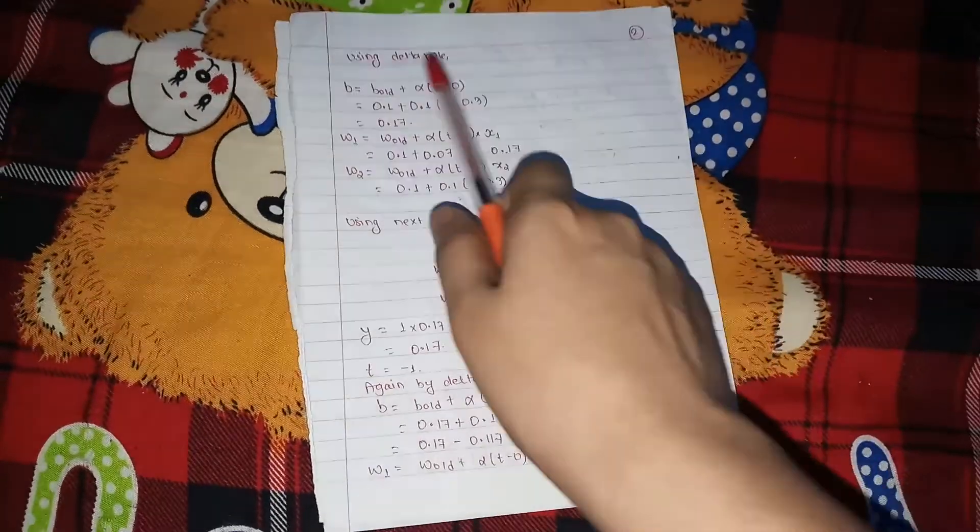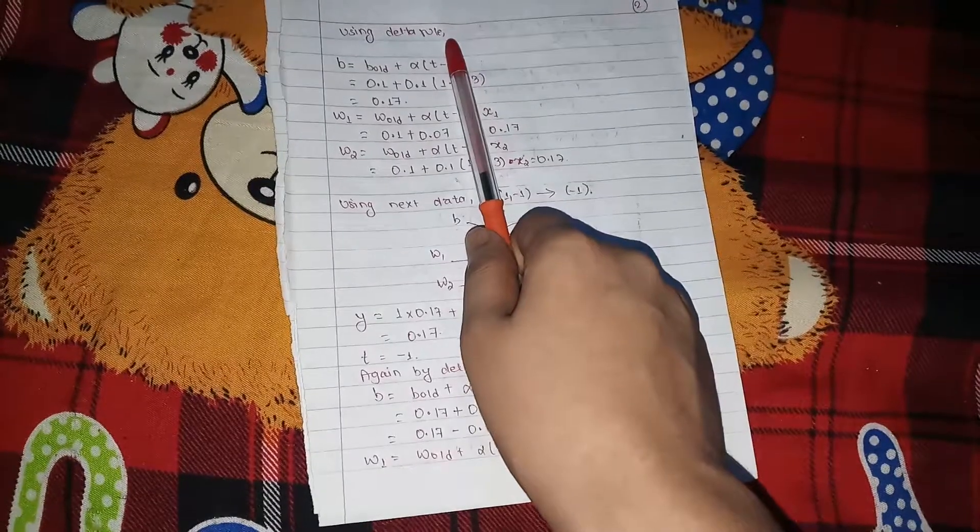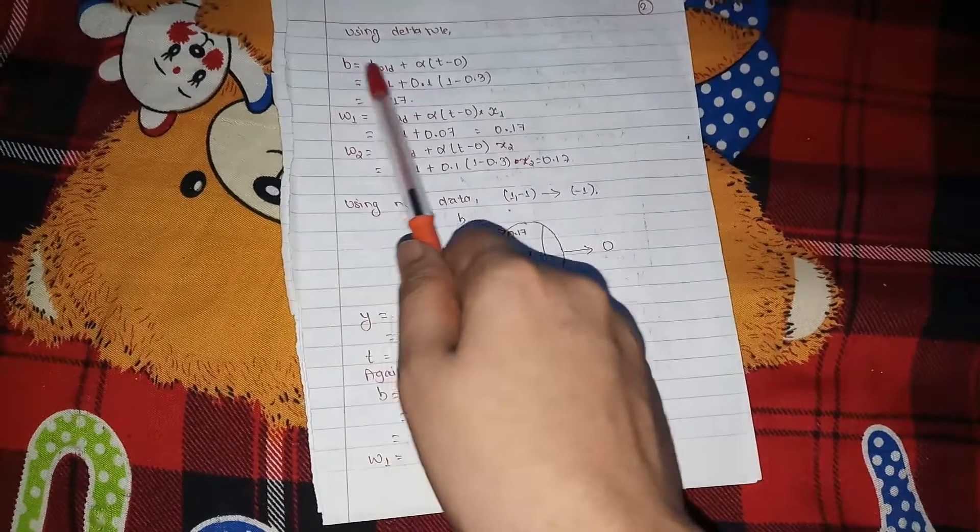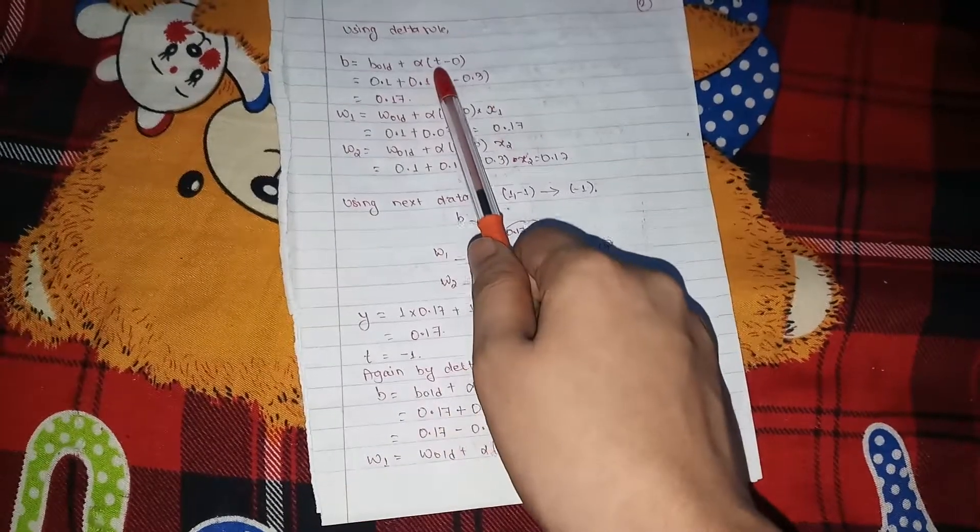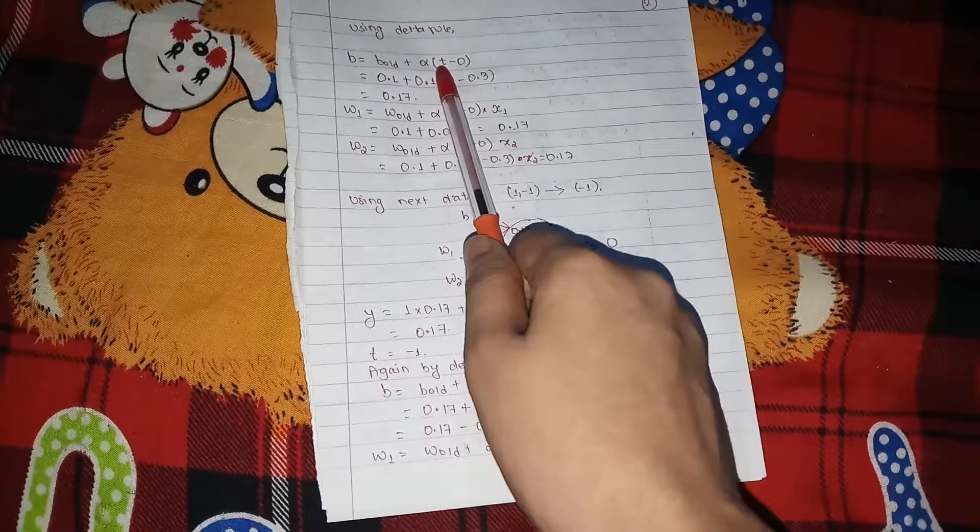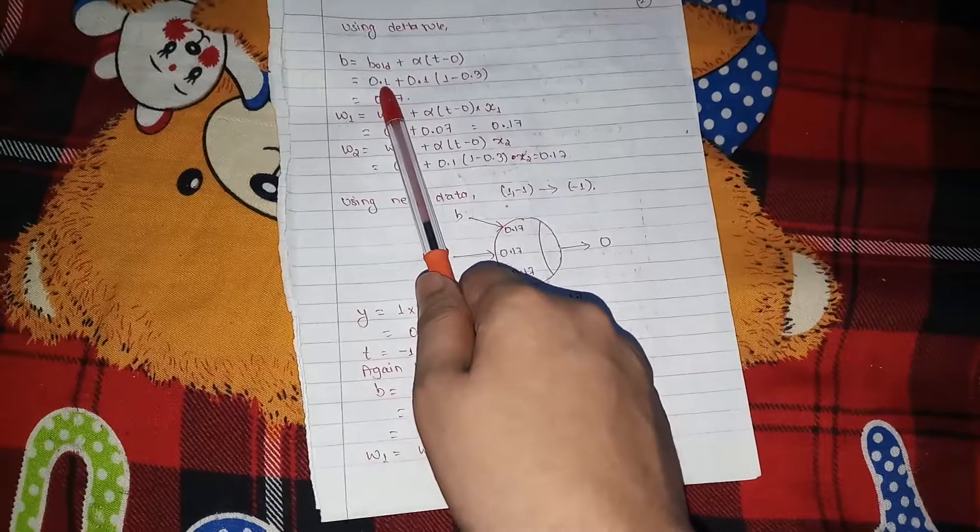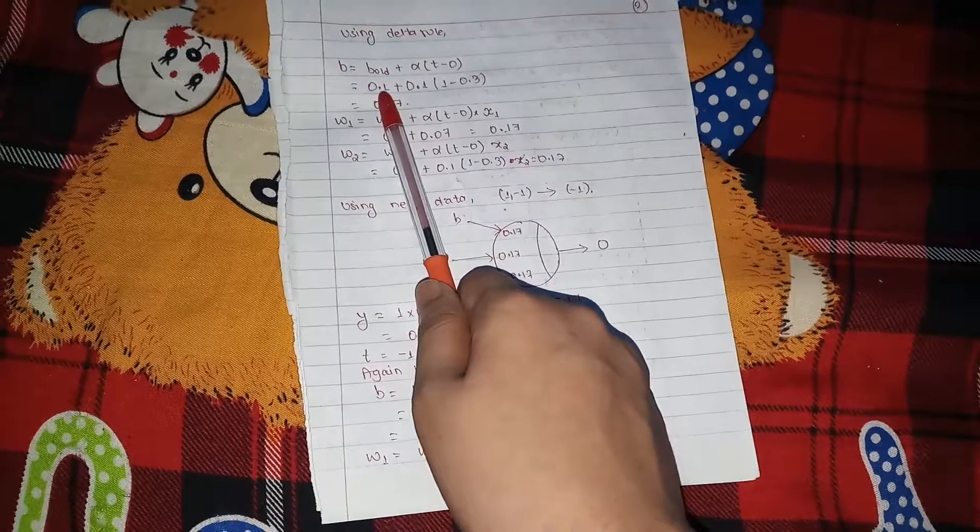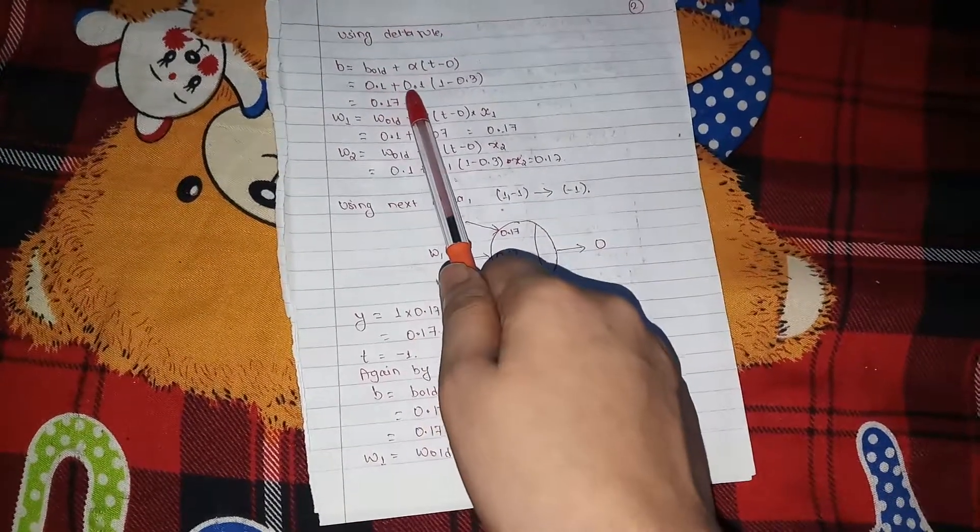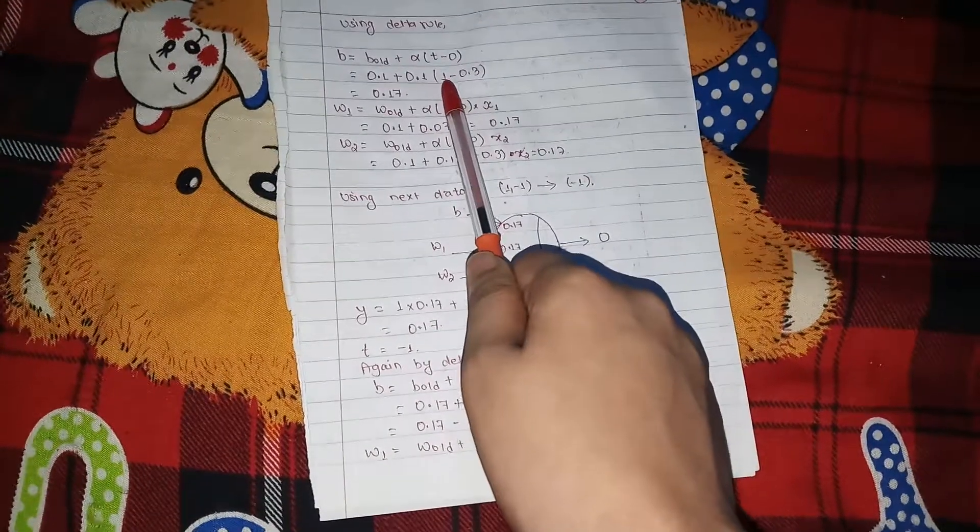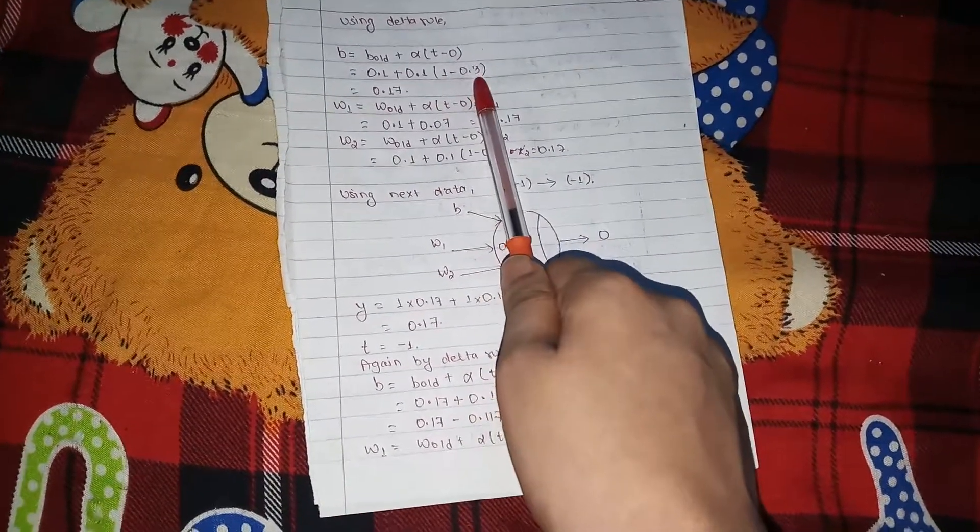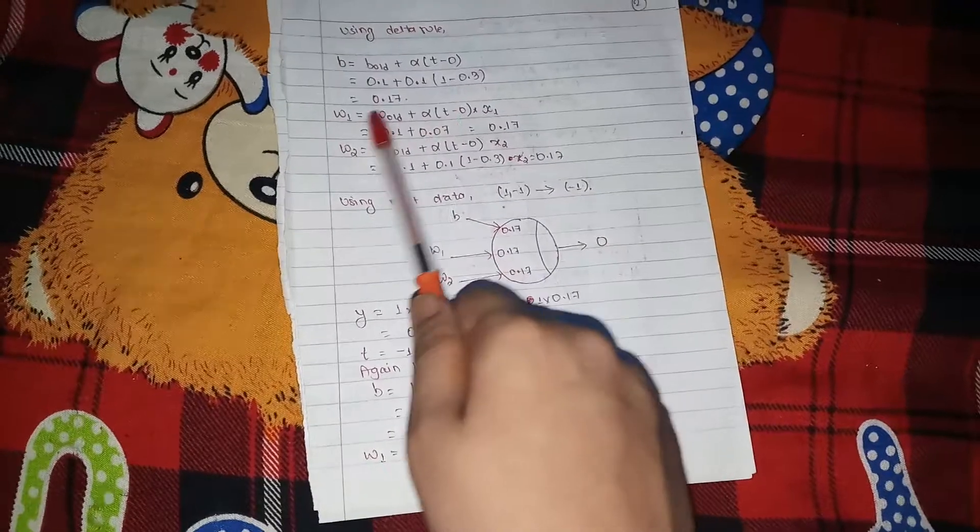Now, using the delta rule, now we need to change the weightage. B is equals to B old plus alpha times T minus O, that is target output, minus what we obtained. 0.1 was the old weightage, plus learning rate is 0.1, T is the target, 1 was the target. How we got 0.3, so the result is 0.1.